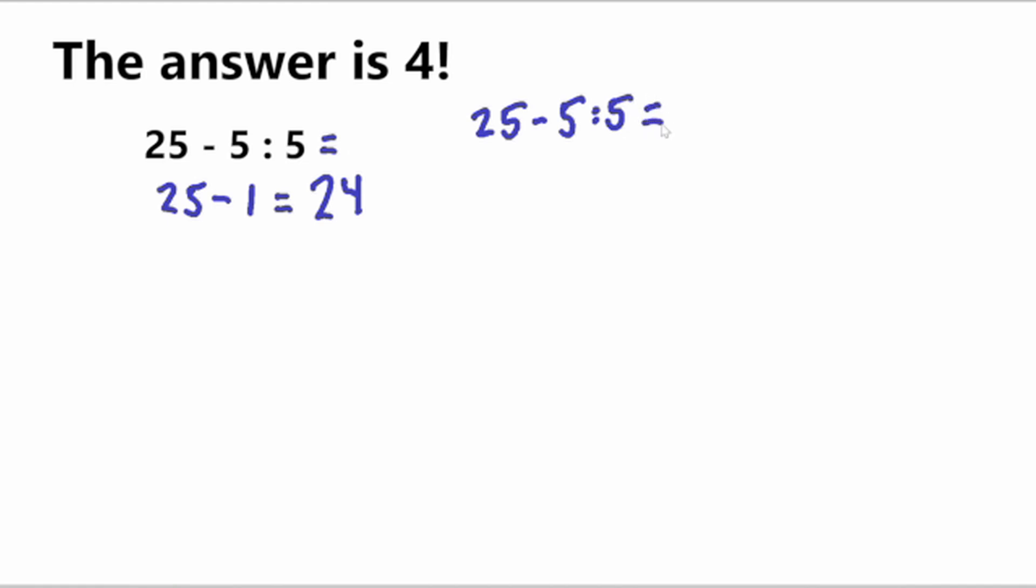But if we were to purposely do this wrong and not oblige by the order of operations, we would have 25 minus 5, which is 20 divided by 5. So 20 divided by 5 is 4.